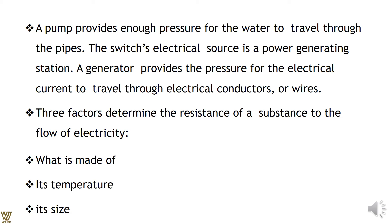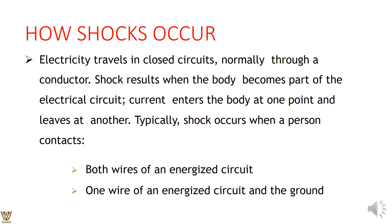Electricity travels in a closed circuit through conductors. Electrical shock results when the human body becomes part of that circuit. This typically occurs when a person contacts both wires of an energized circuit, or when one wire of an energized circuit contacts a person who is also touching the ground, resulting in electrocution — sometimes fatally.